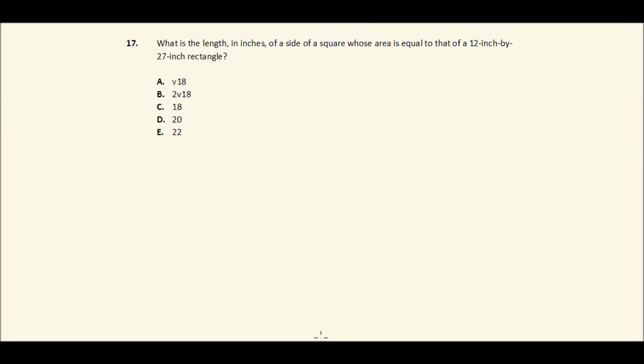This is question 17 for the ACT math exam I'm working through, and this one has to do with testing your ability, again in geometry, and then really working with arithmetic again. So here we go. What is the length in inches of a side of a square whose area is equal to that of a 12 inch by 27 inch rectangle?